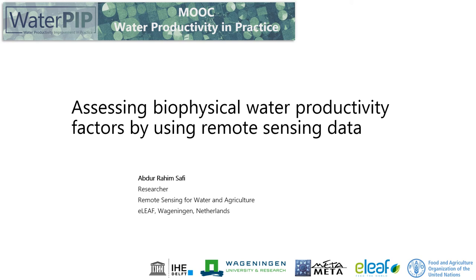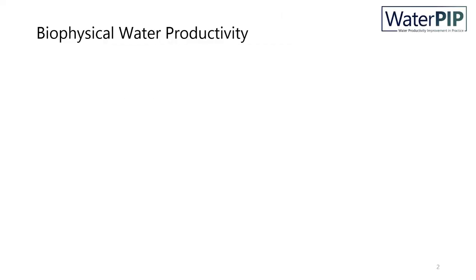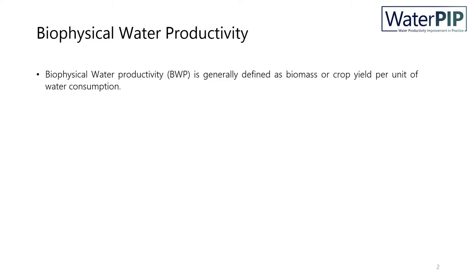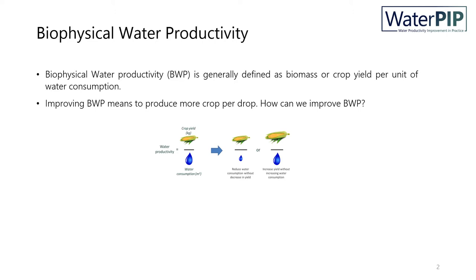Hello everyone and welcome to this video lecture. In this video I will show you how we can use remote sensing data for assessing biophysical water productivity factors. First of all, what is biophysical water productivity? Biophysical water productivity generally means biomass production or crop yield per unit of water consumption. Improving biophysical water productivity means to produce more crop per drop.